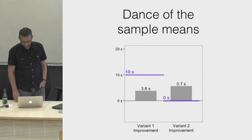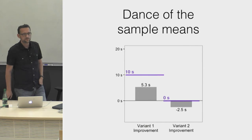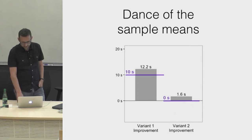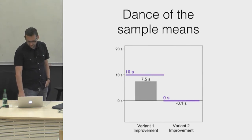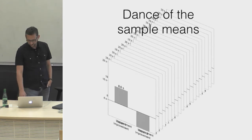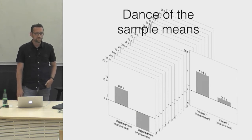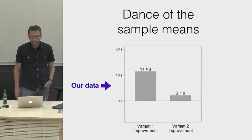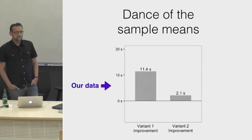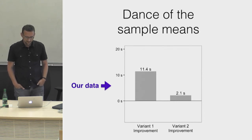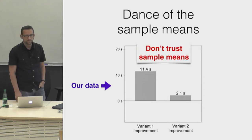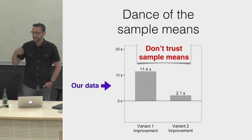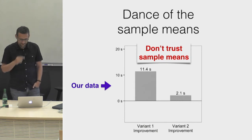Looking at the real population effect sizes, the researcher of course doesn't know them — they can only run a single experiment. This means essentially closing your eyes and taking a random plot from an infinite sequence, of which we just saw a subset. Knowing that the values could have been very different, you shouldn't trust those sample means — though this is nothing new, it's something we all learn in any basic statistics class.